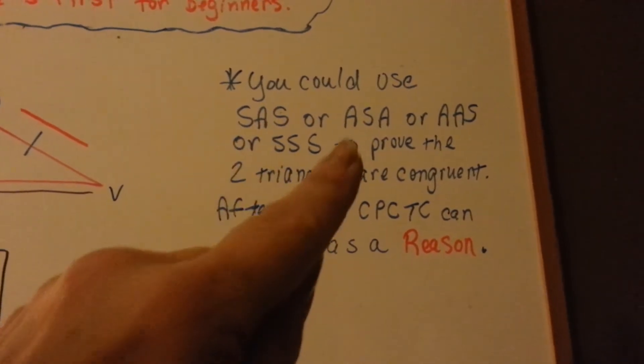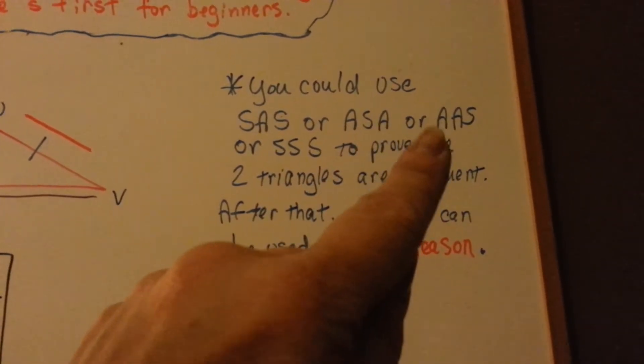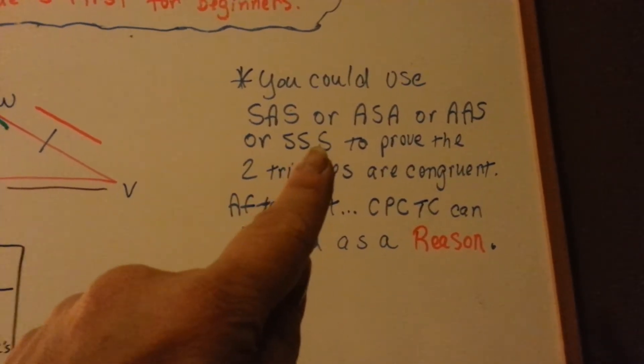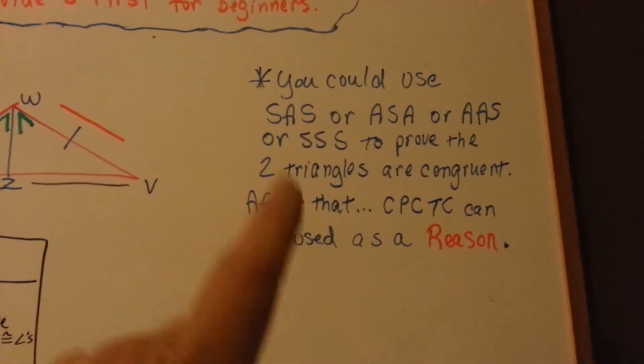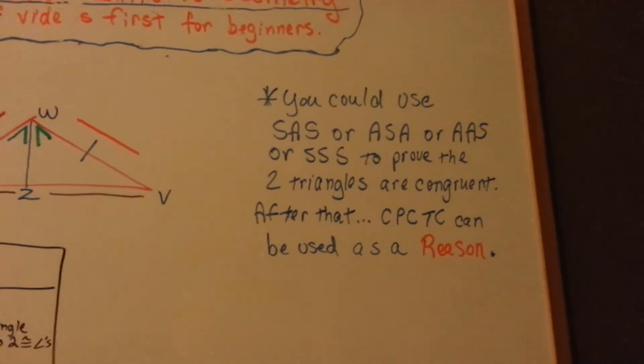This is side, angle, side. This is angle, side, angle. This is angle, angle, side. And this is side, side, side. And this is for right triangles. You really need to watch them if you don't know what they are.